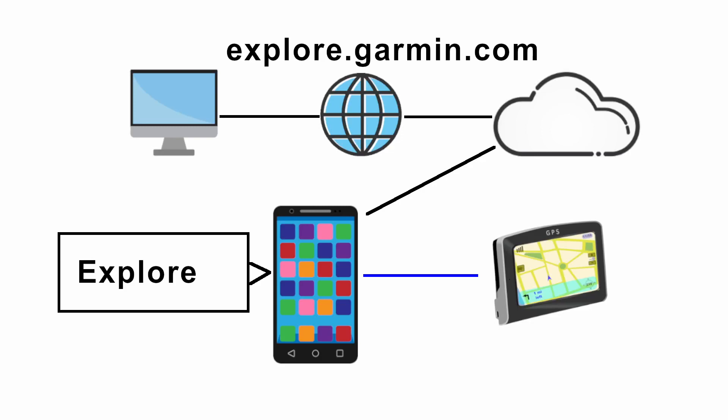Garmin makes automotive and non-automotive navigation devices. This is the setup for non-automotive GPSs. The GPS connects to the phone via a Bluetooth connection. The Explore app ties it all together. Notice, however, the website is explore.garmin.com — that's the same website used by the inReach. The app and the website have the same name.